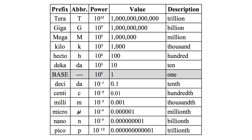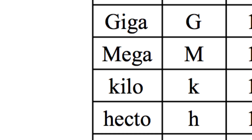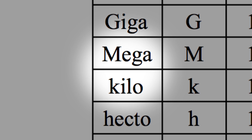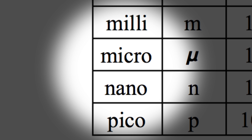Here's a chart for the names of the prefixes used in the metric system. In reference to electrical components, the most commonly used prefixes are kilo and mega for whole numbers, and milli, micro, nano, and pico for decimals.